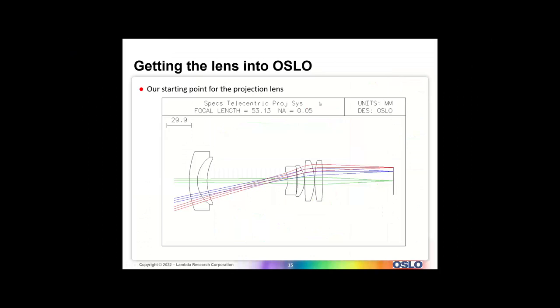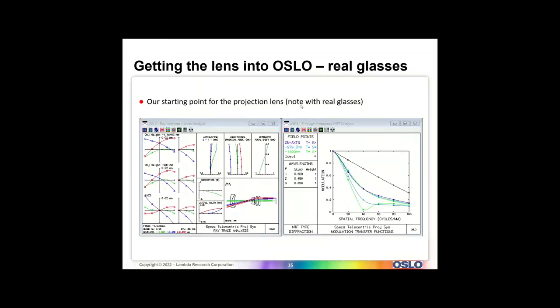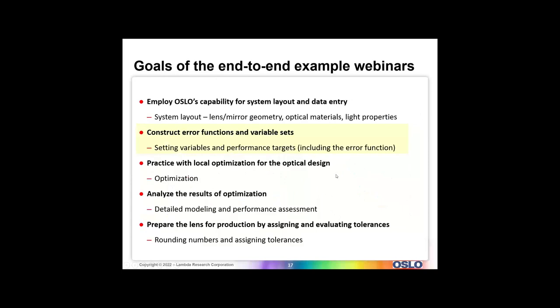Going back to the presentation — here's the lens now in Oslo. Here are the performance curves. You can see this lens has quite a bit of lateral color and quite a bit of astigmatism when we change the specs around. This is completely expected — it really didn't have nearly the spectral bandwidth that we're using here. Plus it's telecentric.